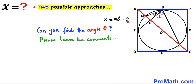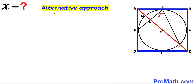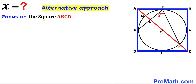Can you find angle theta using this first approach? Now let's look at the alternative approach, focusing on blue square ABCD.